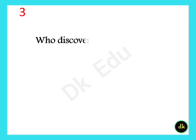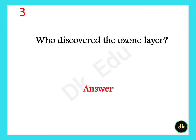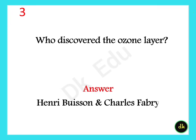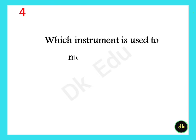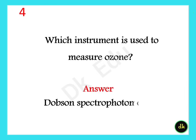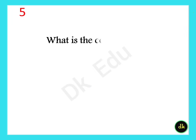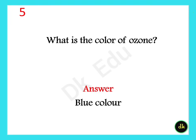Who discovered the ozone layer? Henry Buisson and Charles Fabry. Which instrument is used to measure ozone? The Dobson Spectrophotometer. What is the colour of ozone? Blue colour.